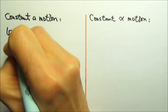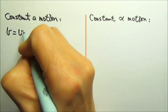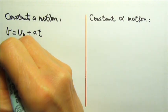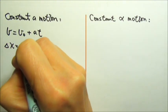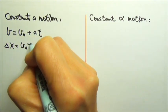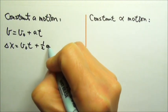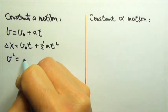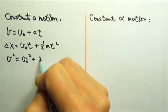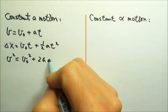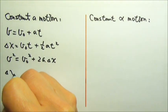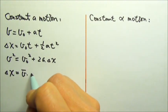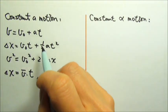We have final velocity equals initial velocity plus AT. Displacement is v₀T plus one-half AT squared, and final velocity squared equals initial velocity squared plus 2A delta X. And delta X is, by definition, average velocity times time.